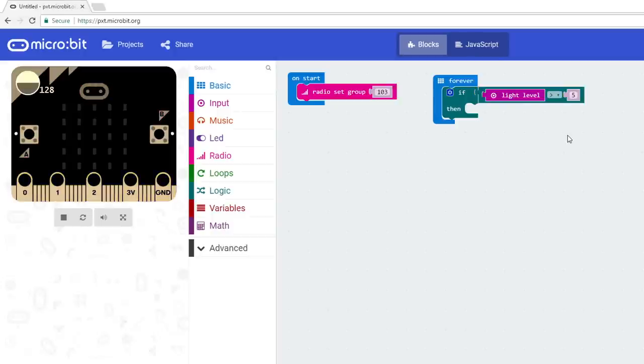The microbit, oddly enough, uses its LED array to detect light levels and it's not very sensitive. I found that in a shadow, the microbit will read a 0 for light level. So, we'll need to place our alarm sensor near a light source to detect when the refrigerator door is opened.